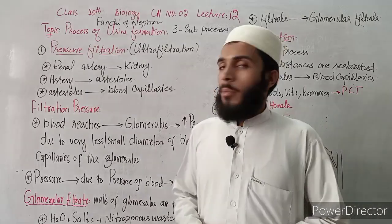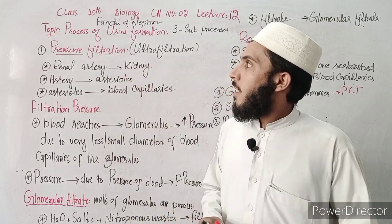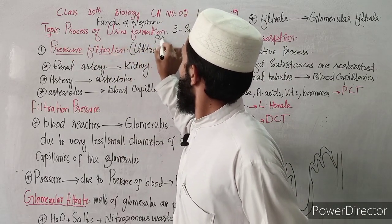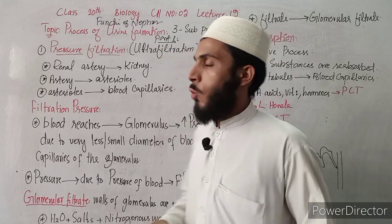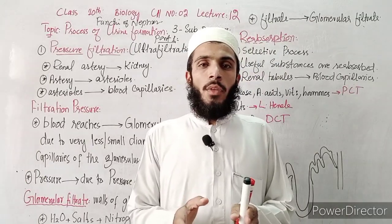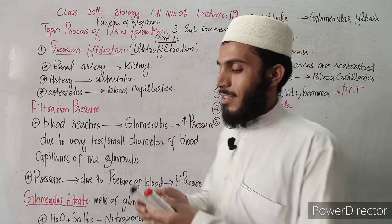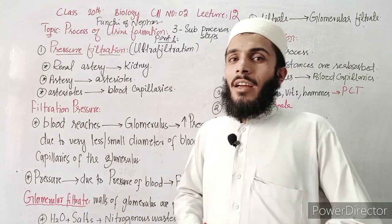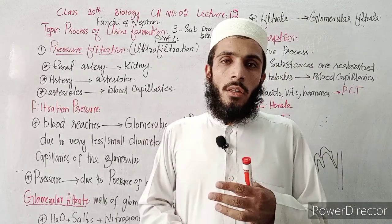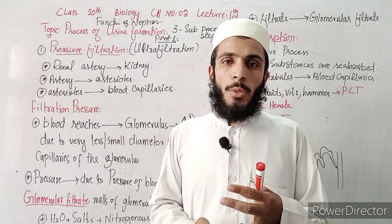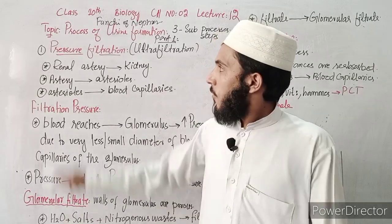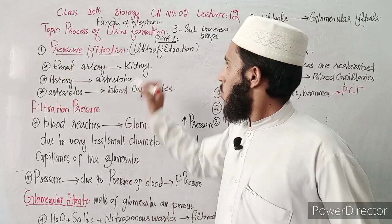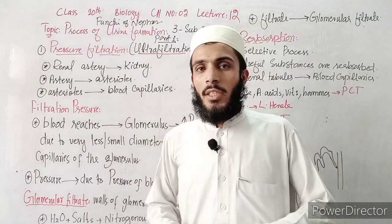The lecture is divided into two parts. In part 1 of the process of urine formation, we cover the steps. The three steps are: first, pressure filtration; second, reabsorption; and third, tubular secretion. The first step is pressure filtration, which is also called ultrafiltration.